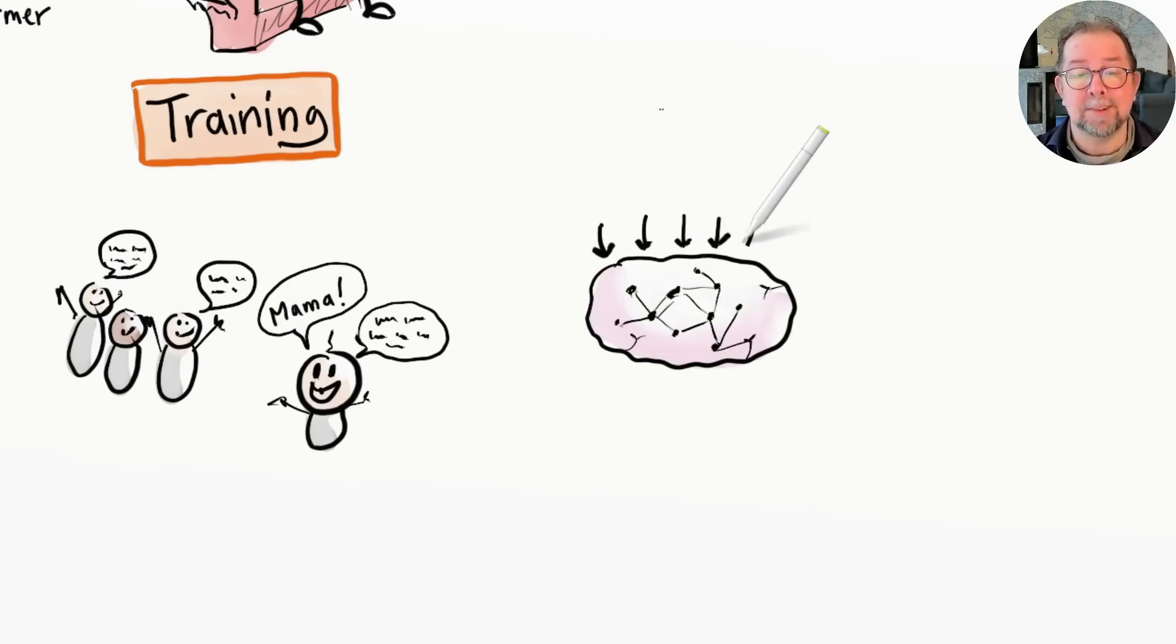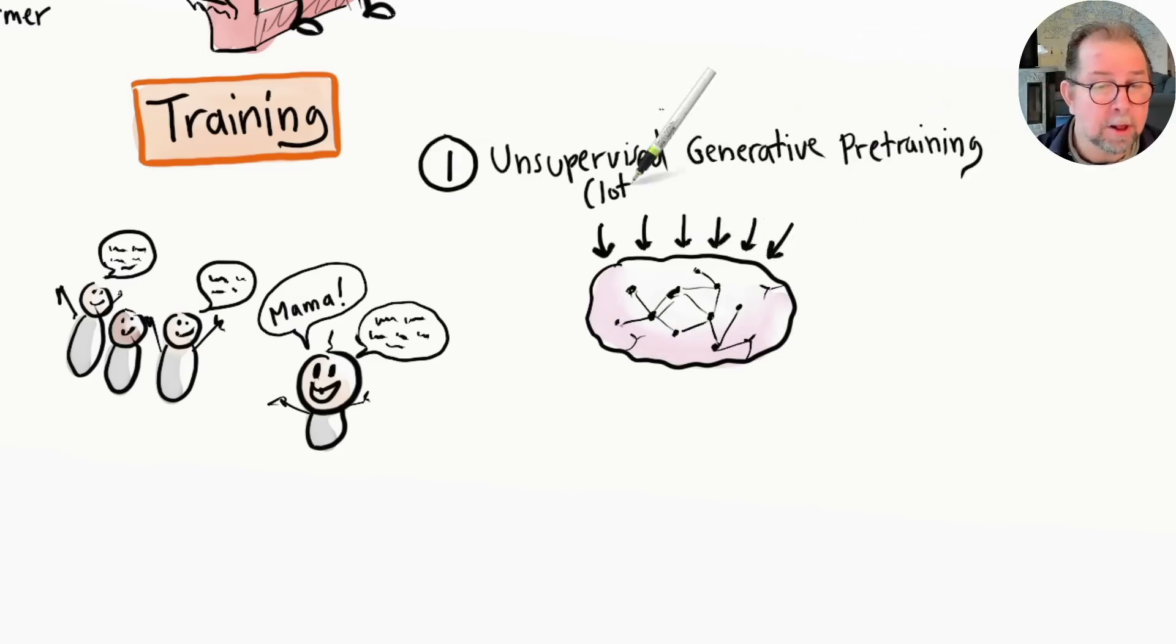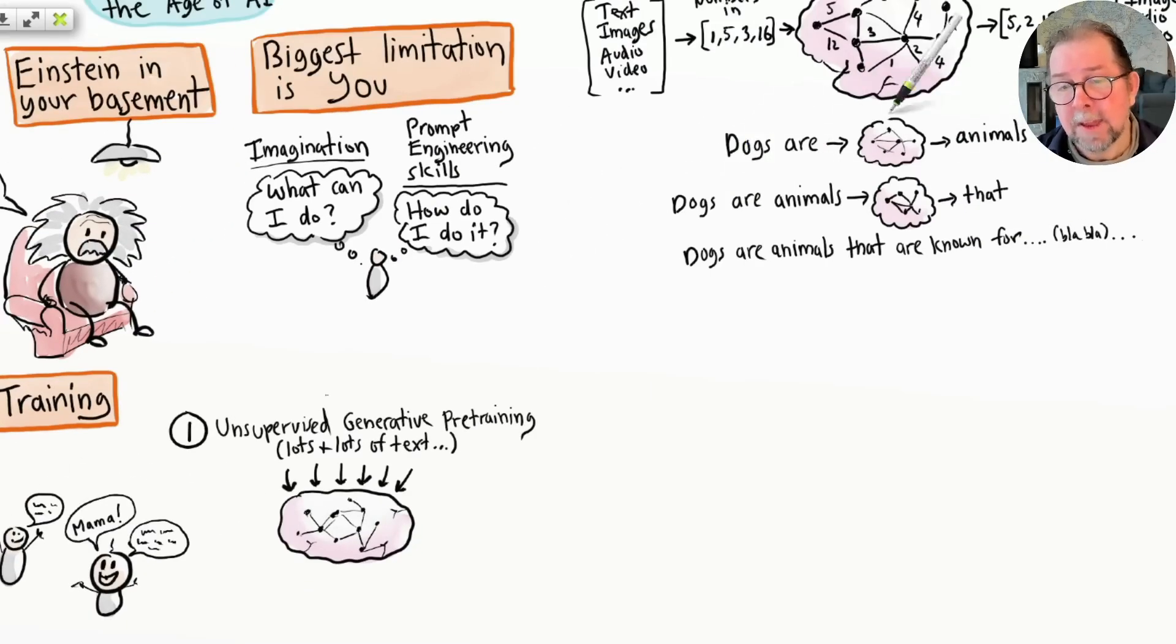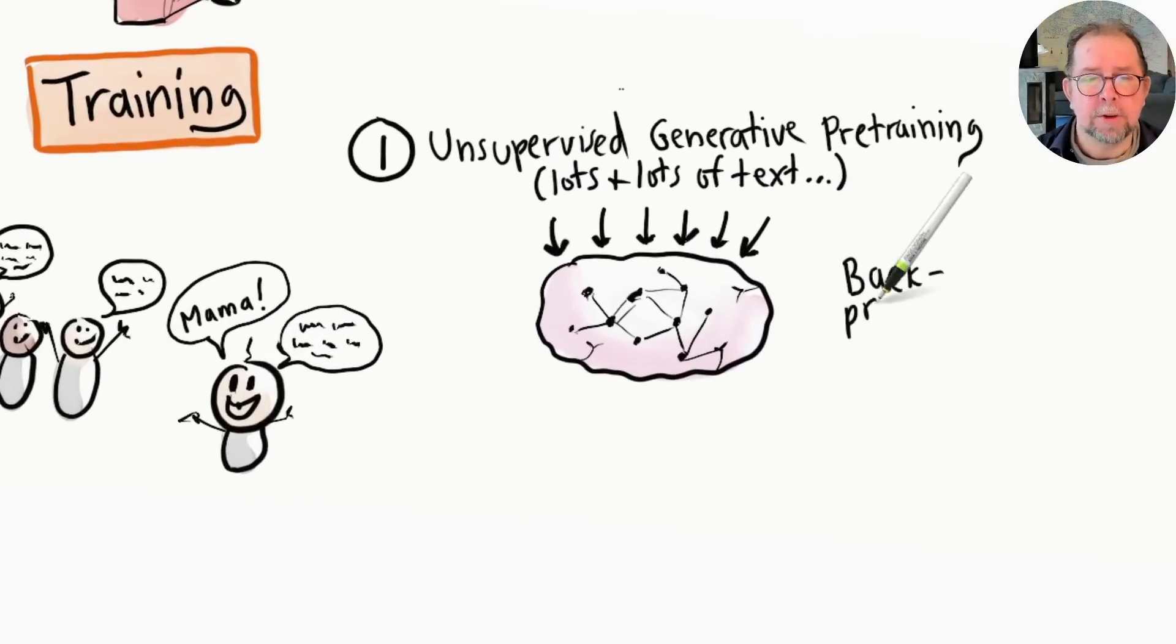It then plays guess-the-next-word with all of this over and over again, and the parameters are automatically tweaked until it starts getting really good at predicting the next word. This is called backpropagation, which is a fancy term for "oh, I guessed wrong, I better change something."